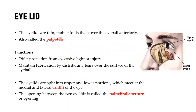Jumping into the accessory structures, we look at the eyelid. The eyelid is basically a thin mobile fold that normally covers the anterior part of the eye. It is also called the palpebra. The function of the eyelid is quite straightforward — offering protection from excessive light or injury when you shut your eyelids, and also maintaining lubrication by distributing tears. The eyelids are split into an upper and lower portion, normally meeting at the lateral and medial canthi. The area between the two eyelids is called the palpebral aperture.